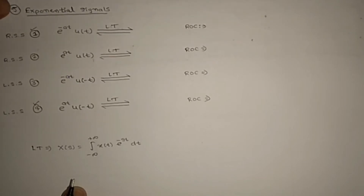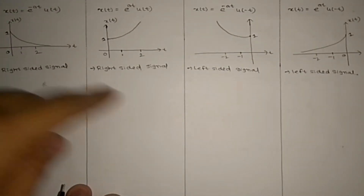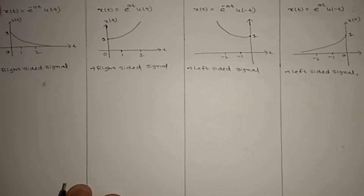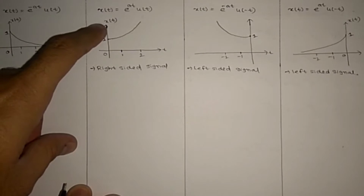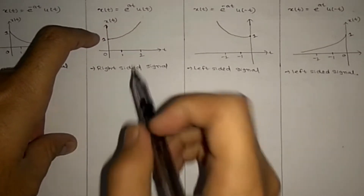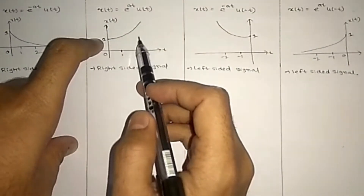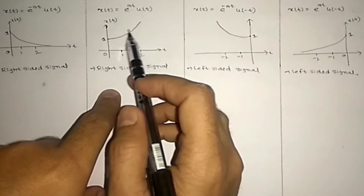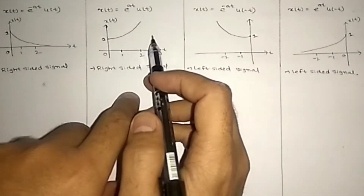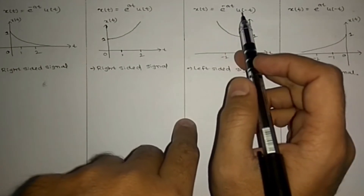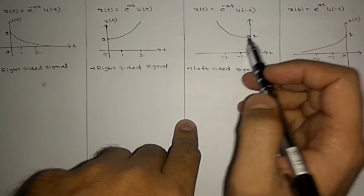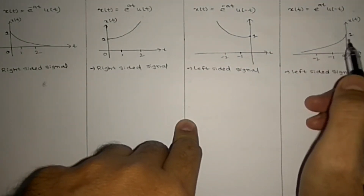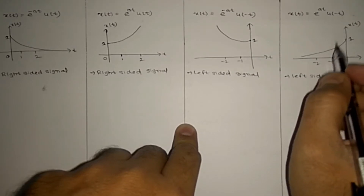Here 4 signals I have drawn already. x(t) = e^(-at)u(t) is an exponentially decaying signal, so it is absolutely integrable. x(t) = e^(at)u(t) is an exponentially increasing signal, so it is not absolutely integrable. e^(-at)u(-t) also has infinite area, and e^(at)u(-t) is absolutely integrable.